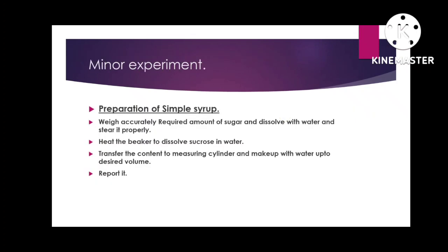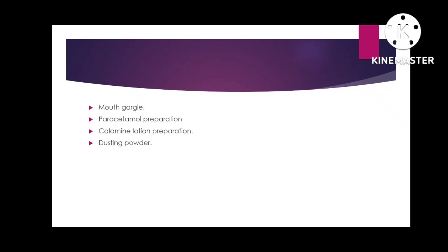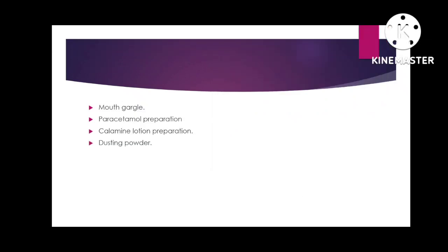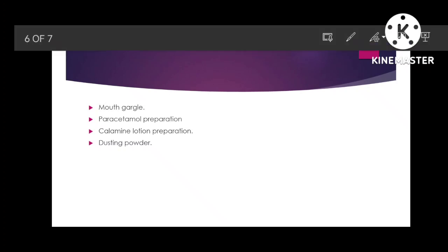For minor experiments: simple syrup — weigh an accurate amount of sugar, dissolve in water, stir properly, heat the beaker to dissolve the sucrose, and transfer to a measuring cylinder. Prepare whatever volume your teacher specifies, such as 20 ml or 50 ml. Other important minor experiments include: mouth gargle, paracetamol preparation, calamine lotion, and dusting powder. Practice all of these — they are all very important.